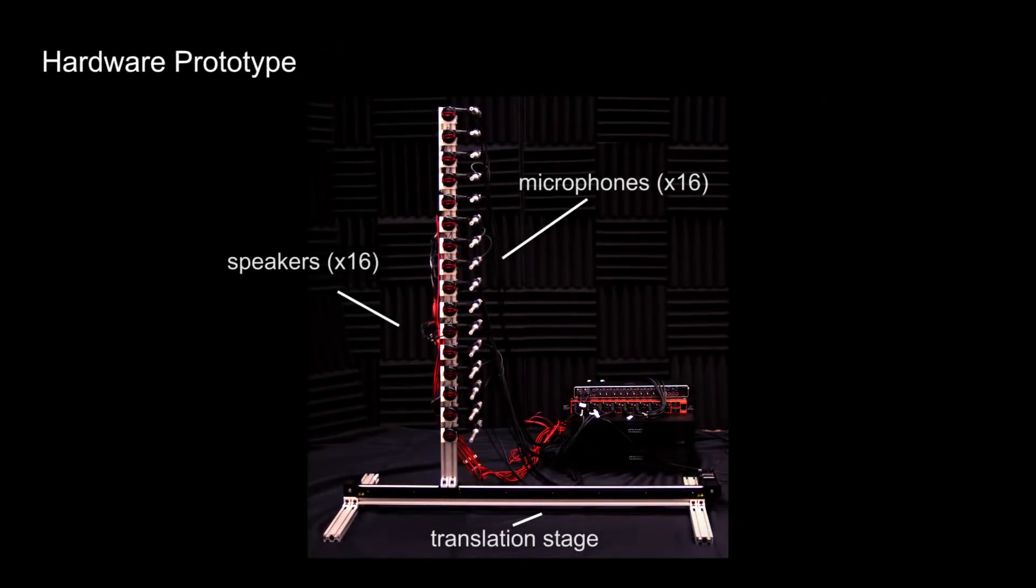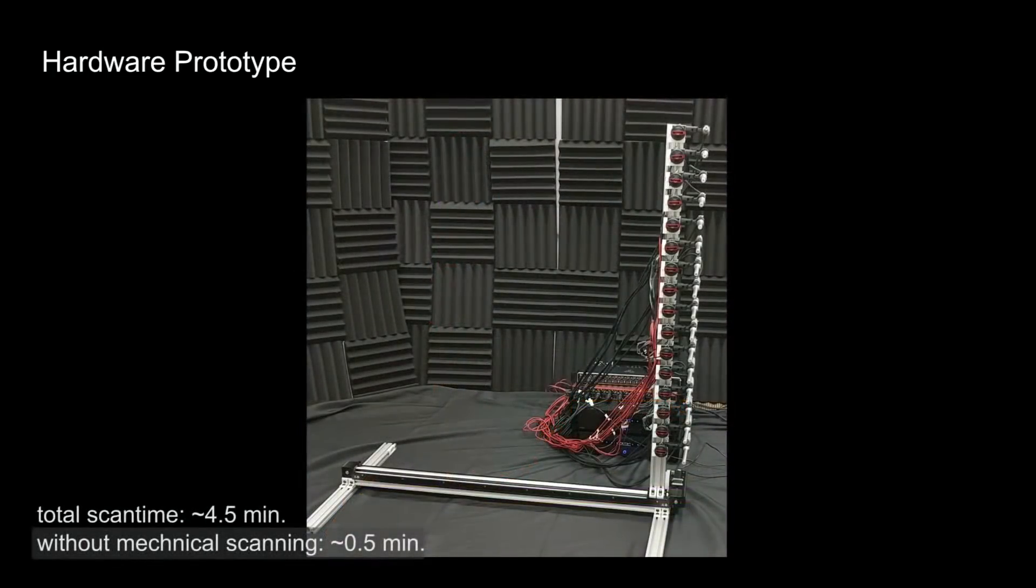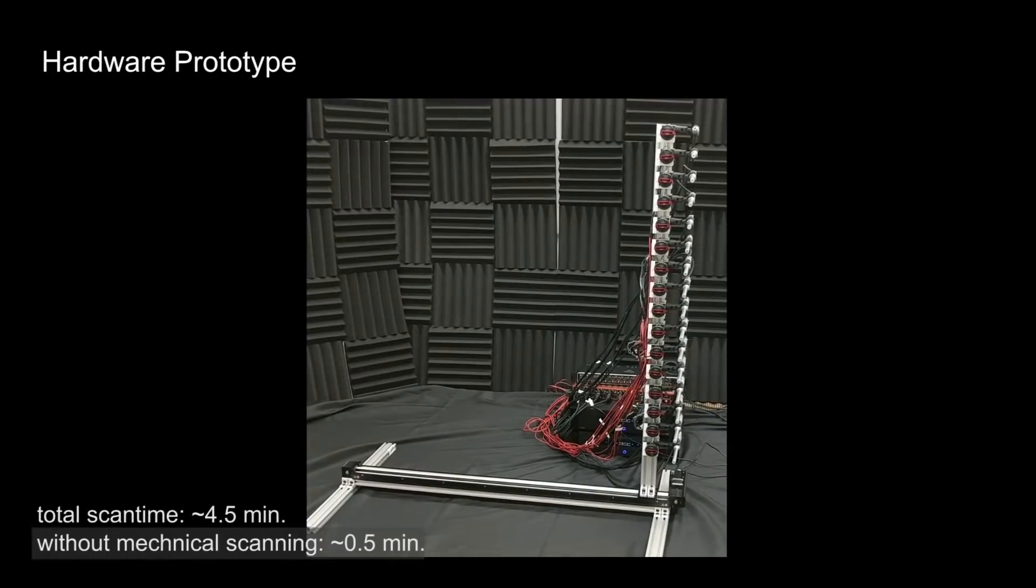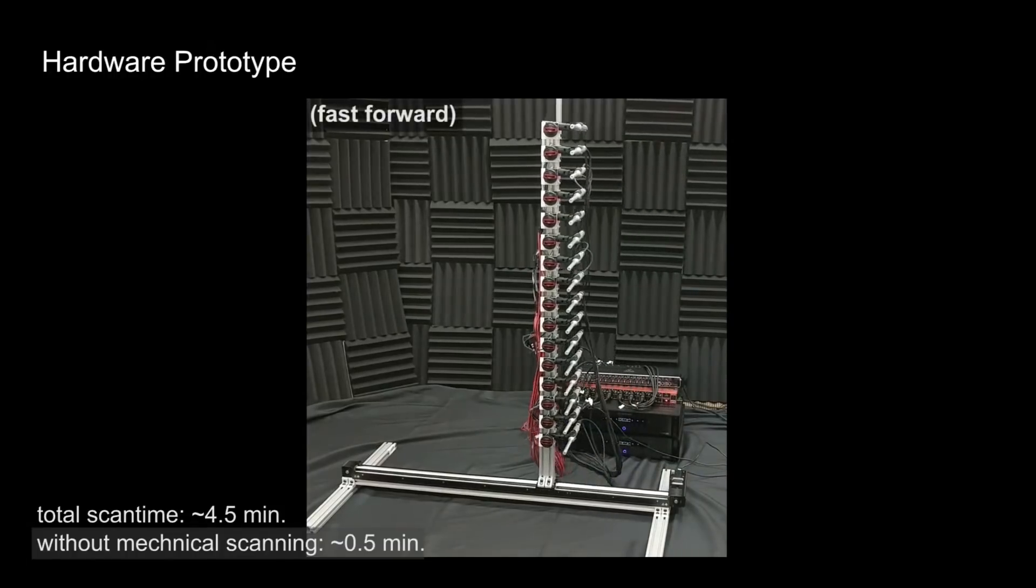We build a hardware prototype to evaluate our technique and scan a variety of scenes. The hardware consists of 16 speakers and microphones mounted on a vertical bar, which is scanned horizontally with a translation stage. Each speaker emits an acoustic signal whose reflection is measured by the 16 omnidirectional microphones. After scanning the array, we can reconstruct the 3D volume containing the hidden object.